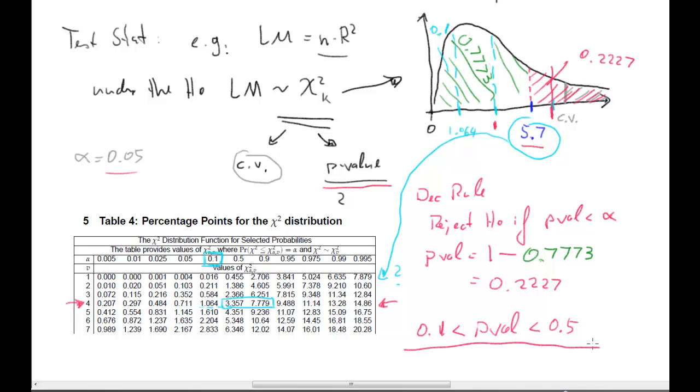So, this is all you can establish from the table. That's the only thing you can say from the table, that the p-value is smaller than 0.5 and larger than 0.1. But that, you know, if you were to be asked for that in the exam, that's all we want to know. That's the end of the p-value revision.